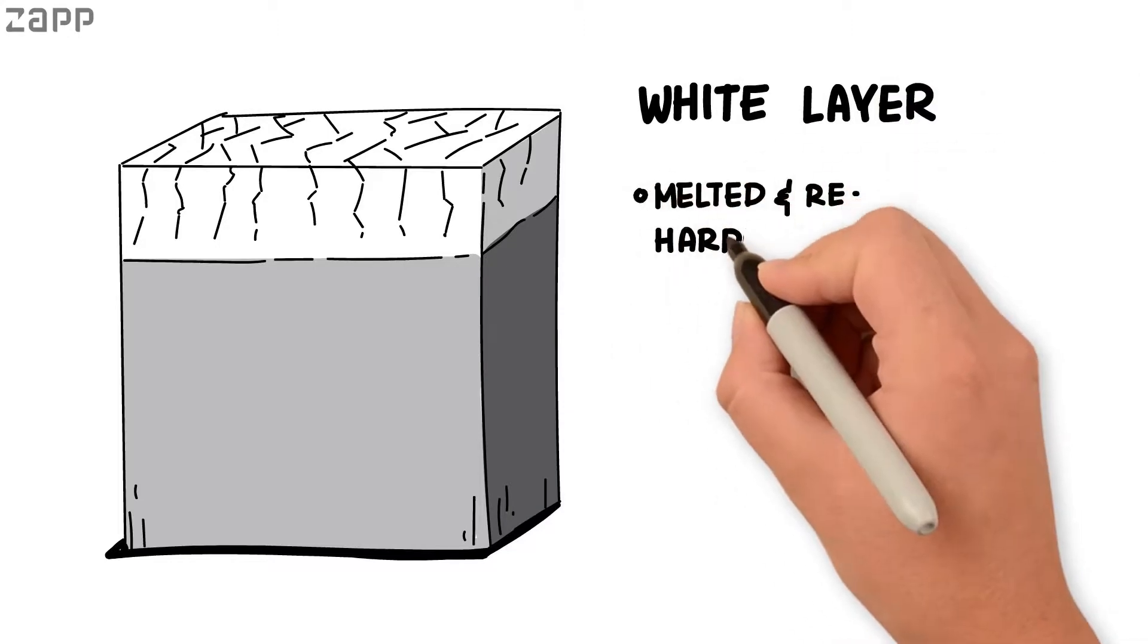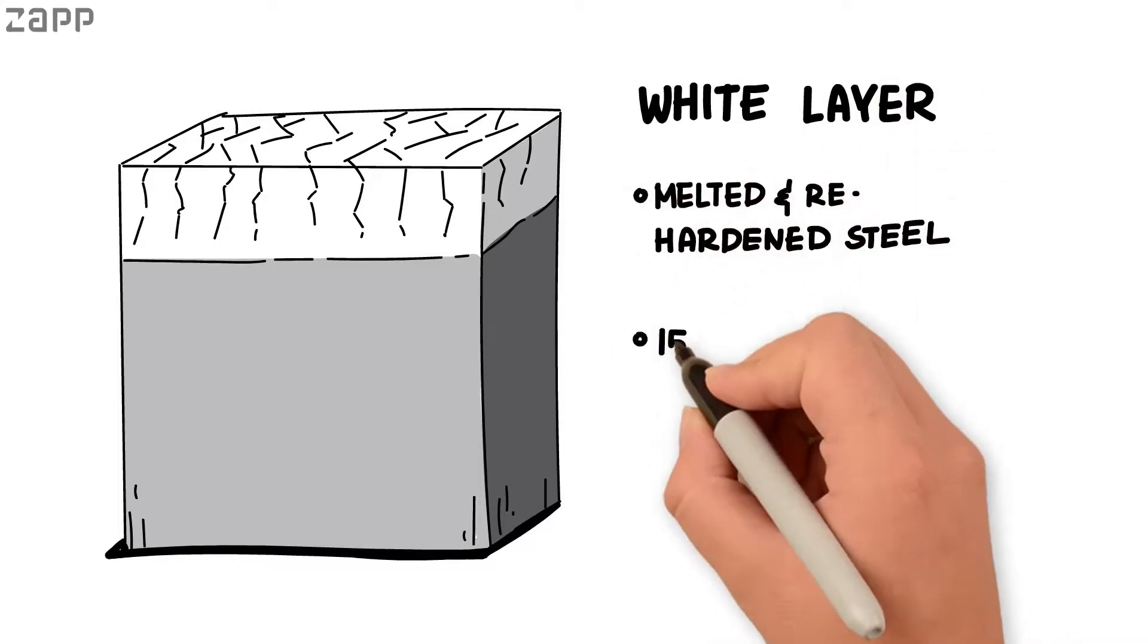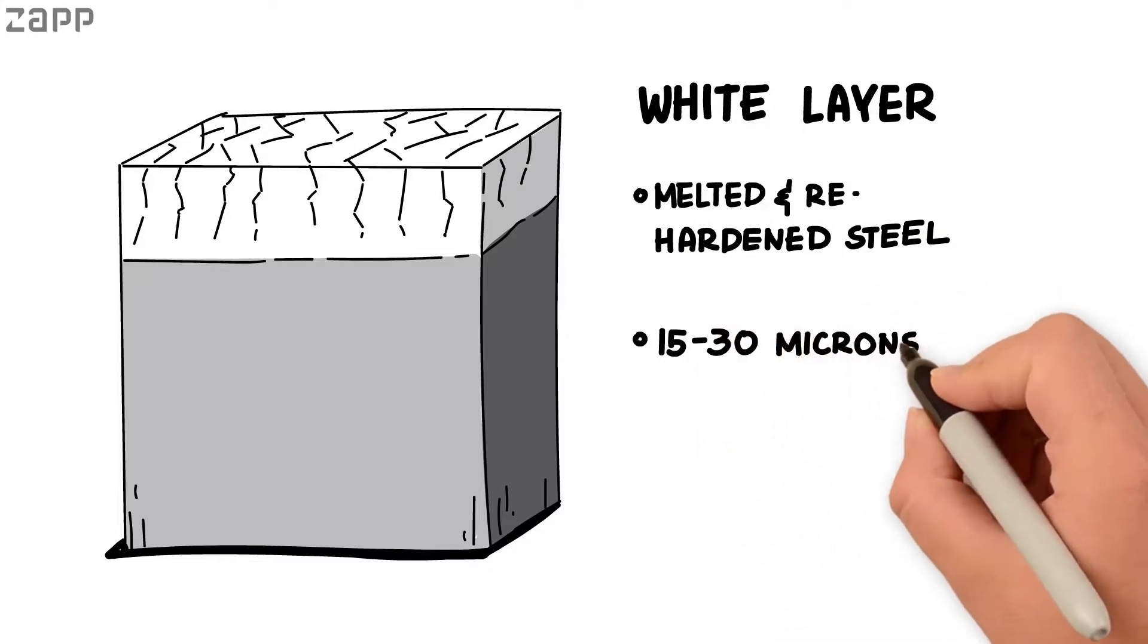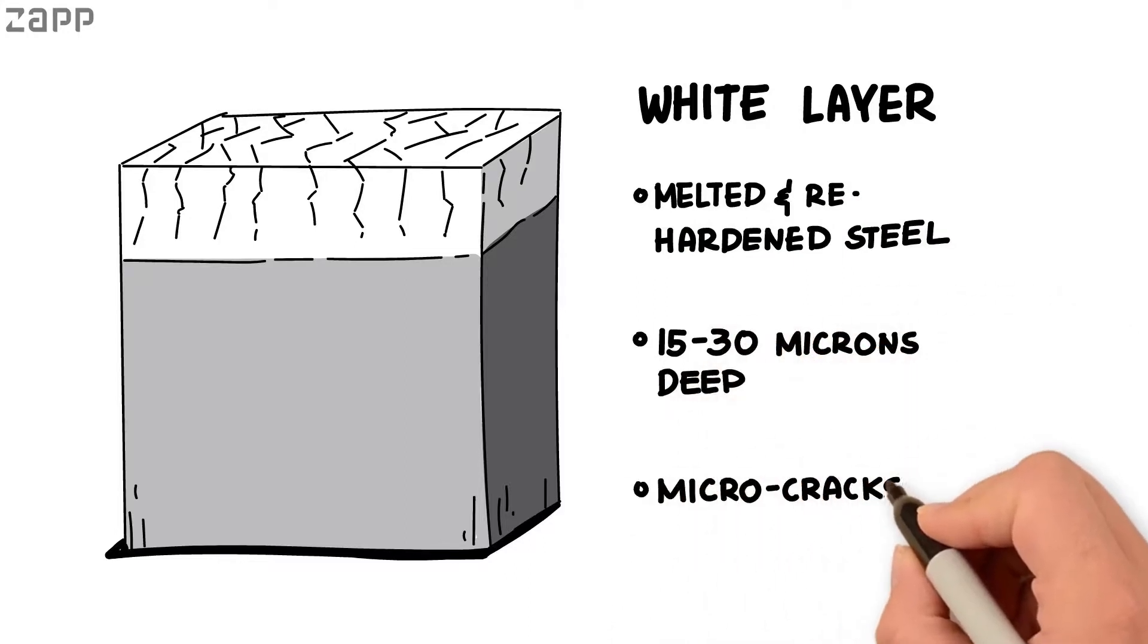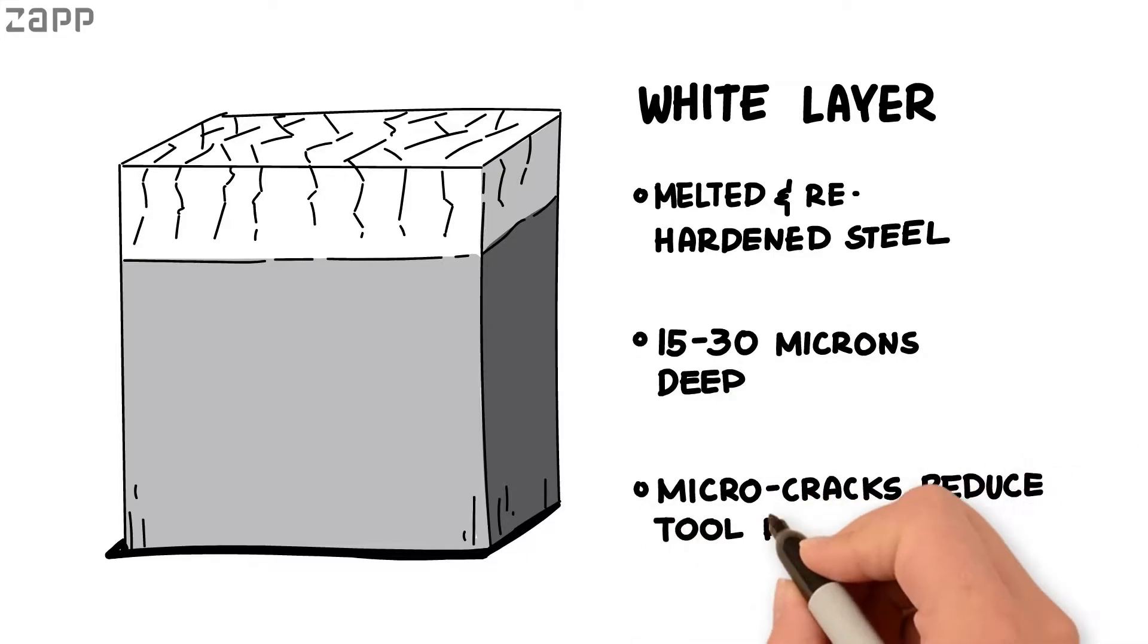The structure is untempered martensite, which is hard, brittle, and contains a multitude of microscopic cracks. These micro-cracks shorten tool life by providing a starting point for a larger crack to occur.